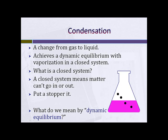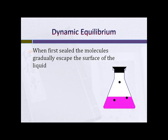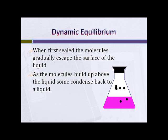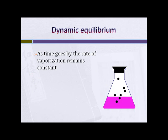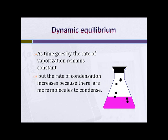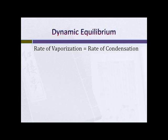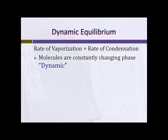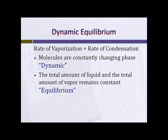What do we mean by dynamic equilibrium? Equilibrium will be studied further in a future chapter — that's chemical equilibrium — but this is physical equilibrium, and it's dynamic. When first sealed, the molecules gradually escape the surface of the liquid and the pressure of the gas above the liquid goes up. As the molecules build up above the liquid, some condense back. When the rate of vaporization and the rate of condensation end up being the same, we have a dynamic equilibrium — no observed change in the system. Because molecules are constantly changing phase, it's dynamic, and because the total amount of liquid and vapor remains constant, we're at equilibrium.